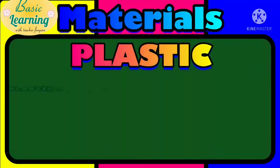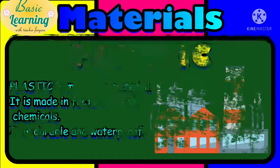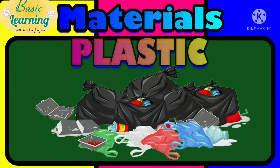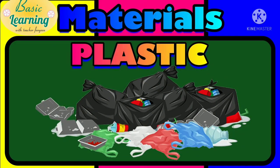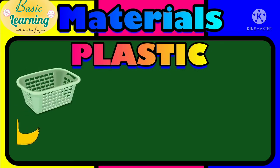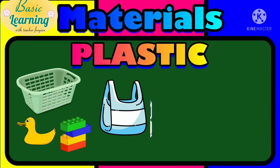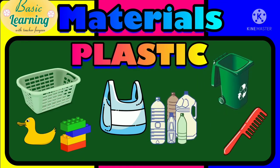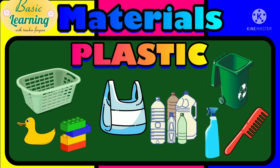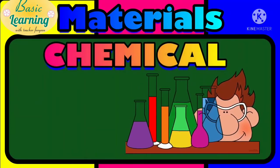The sixth type of material is plastic. Plastic is a man-made material made in factories with chemicals. It is durable and waterproof. It is light, so it floats on water. We can see plastics everywhere around us. Things made of plastic include your laundry basket, plastic toy ducks, toy blocks, carry bags, bottles, recycle bins, comb, and sprayer. These are all made of plastics.